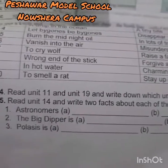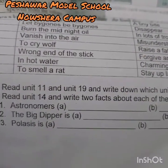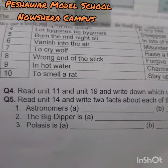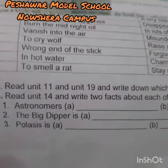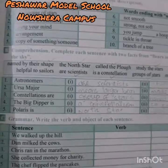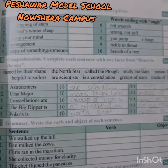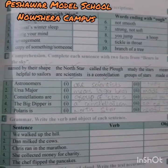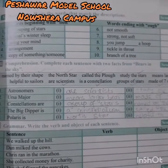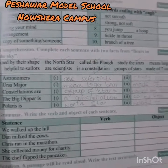I will explain all the given options and their answers to you, but that will not be the complete explanation of the unit — you have to read that yourself. Let's go to the book. This is Exercise B, page number 79, Unit 14. The question is: comprehension — complete each sentence with two facts from 'Bears in the Sky' using the phrases in the box below.